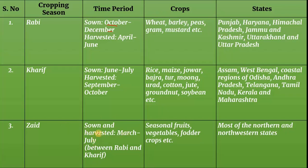The Zaid season crops are sown and harvested between March and July.